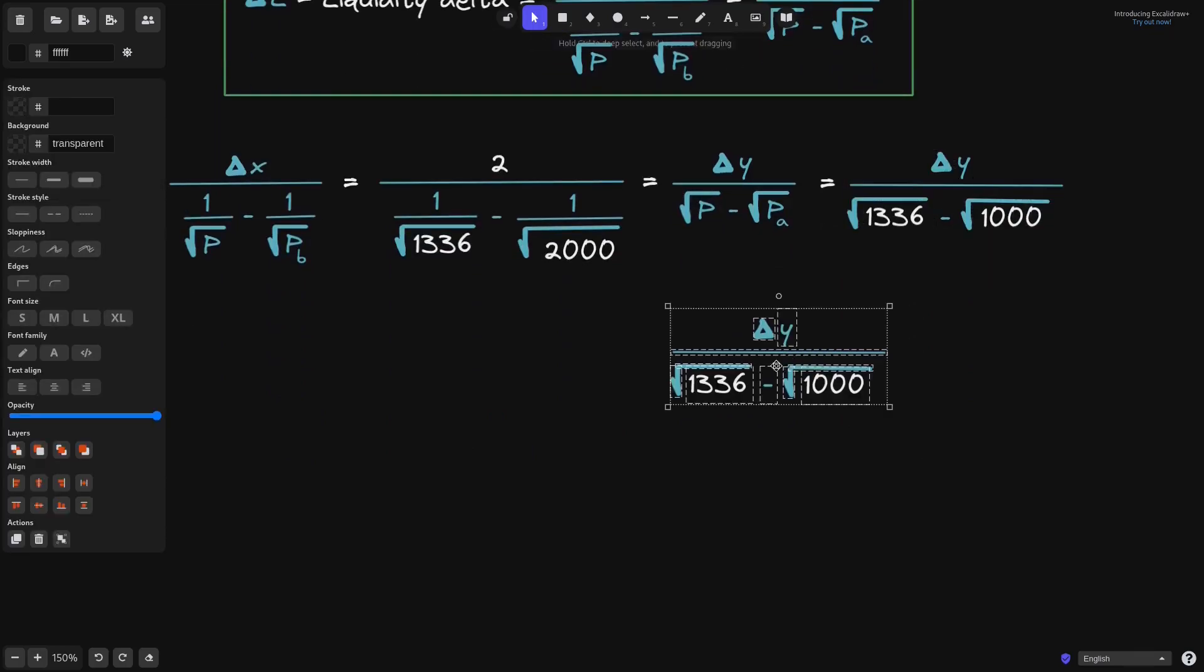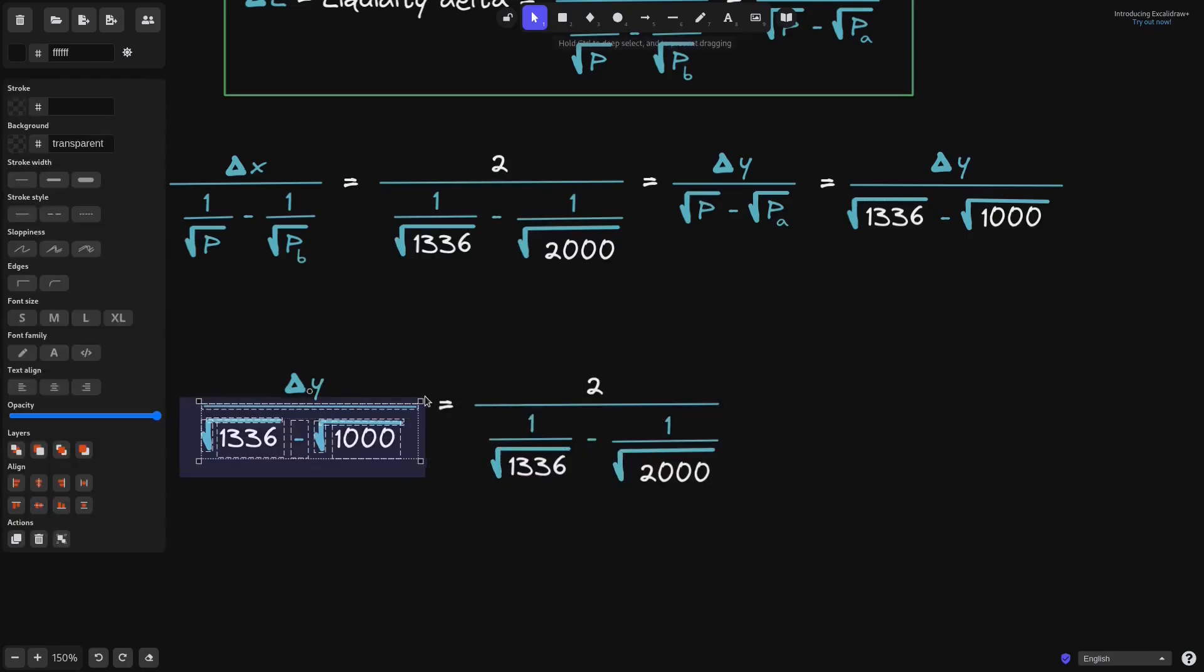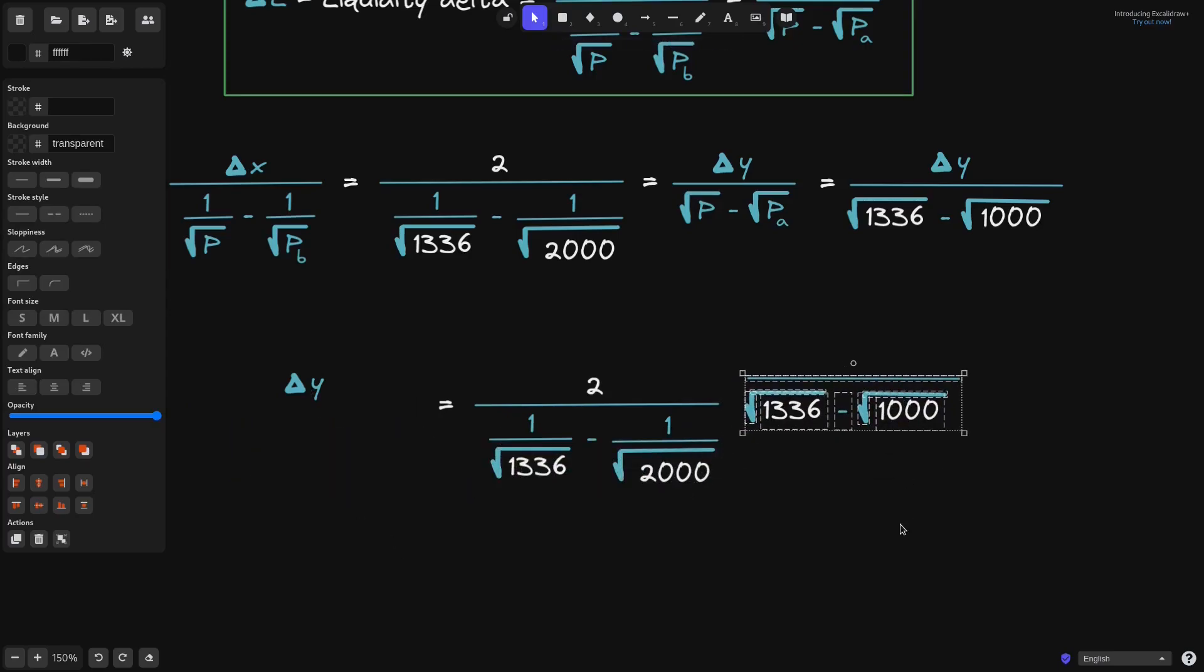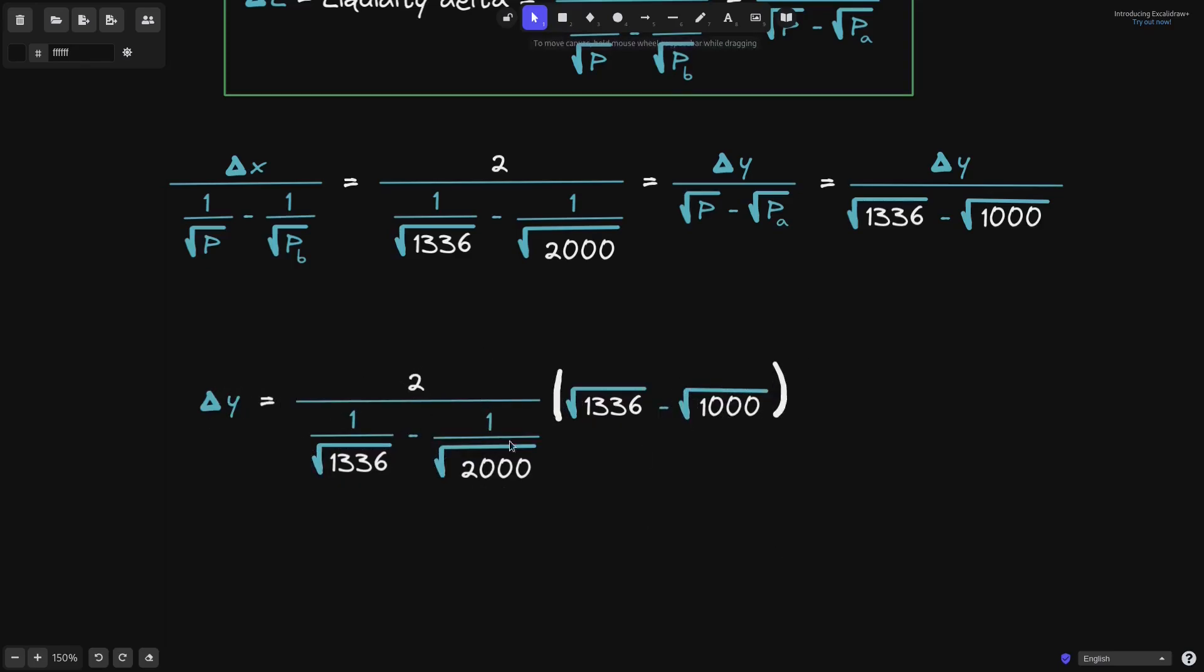I'll copy this, paste it here. And we know that this part of the equation is equal to this equation. And this means that delta Y will be equal to multiplying this part of the equation. So I'll bring this over here to the right, and we have the expression delta Y is equal to this calculation.